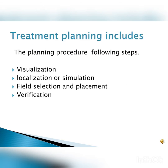The treatment planning process includes the following procedures: number one, visualization; number two, localization or simulation; number three, field selection and placement; and number four, verification. These are the key procedures of treatment planning.